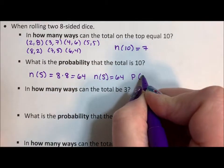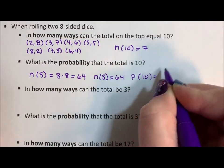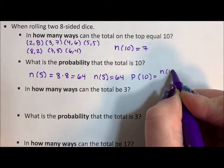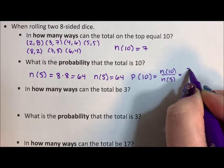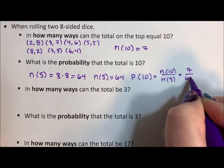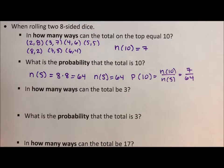So the probability of 10 equals the number of ways to get 10 over the sample space, which is 7 over 64.